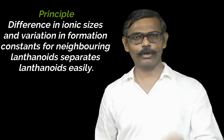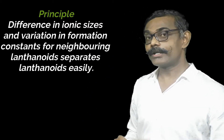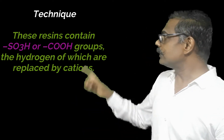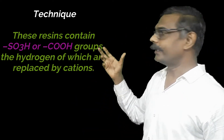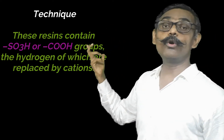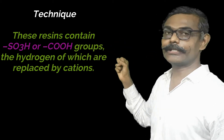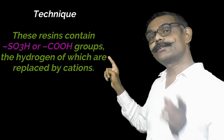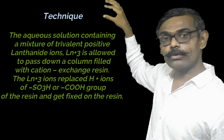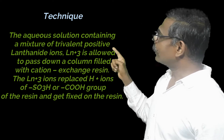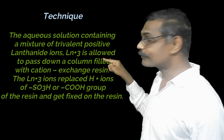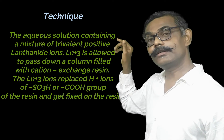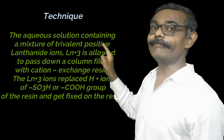The elution method is the same for all lanthanoids — that is our principle. The resin contains SO₃H or COOH groups, and the H⁺ present here will be replaced by lanthanoid ions. When the aqueous solution of lanthanoids is passed through this resin column, lanthanoid ions replace H⁺ from the SO₃H or COOH groups and get fixed in the resin. However, it is not 100% absorption — there is an equilibrium.